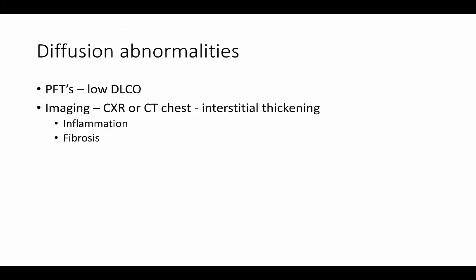Diffusion abnormalities is another common cause of hypoxemia. If we have the luxury of time or we have old pulmonary function tests, we may find a low diffusion capacity of carbon monoxide, which indicates an impaired diffusion of oxygen as well. However, usually when we are assessing a patient who is hypoxemic, the standard testing includes imaging of the chest, either by chest x-ray or a CT scan, to look for interstitial thickening. This might indicate inflammation or fibrosis, which is impairing the diffusion of oxygen from the alveoli into the blood vessels.